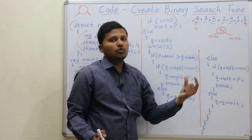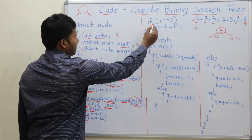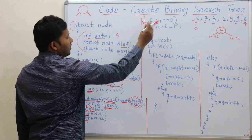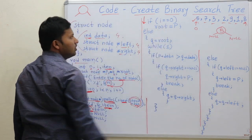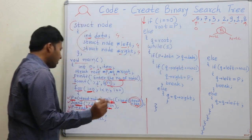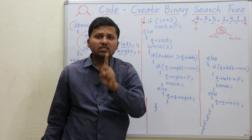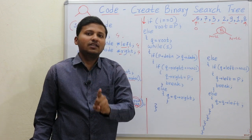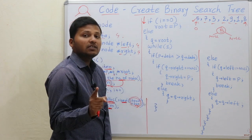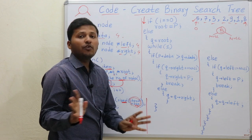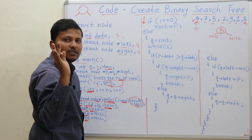Now what to do with this node? How to find its correct position in the binary search tree? If i equal to equal to 0, then root equal to p. What it means is: if it is the first element entered by the user, then that element must be the root of the binary search tree. As you know, we make the first element as the root, so element 5 will become the root.